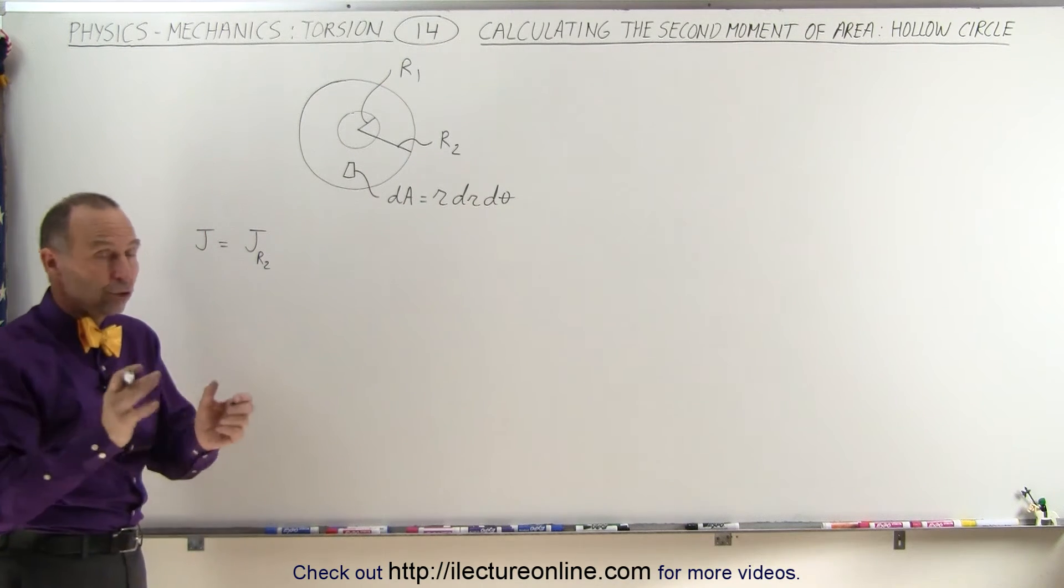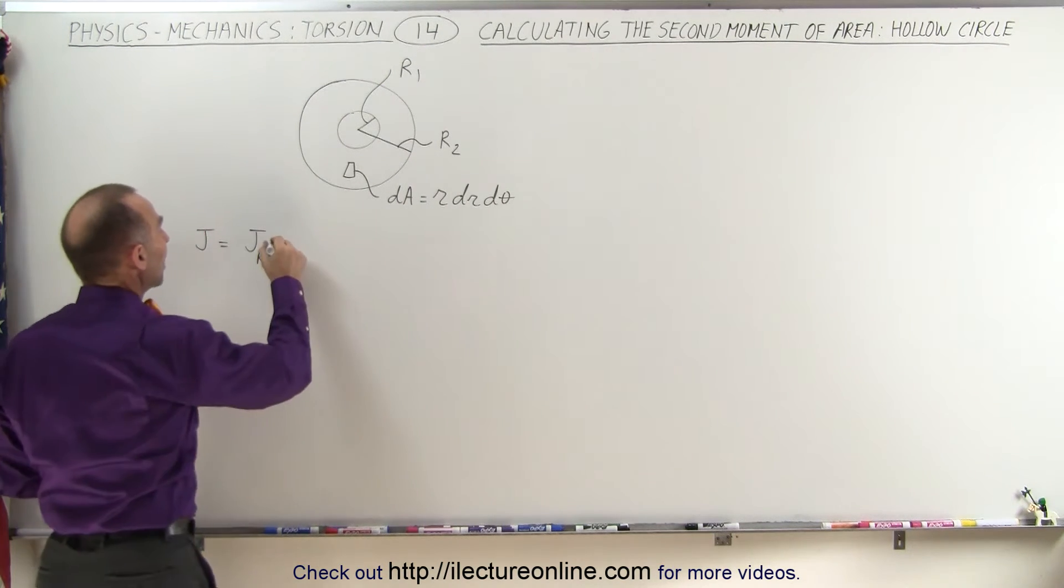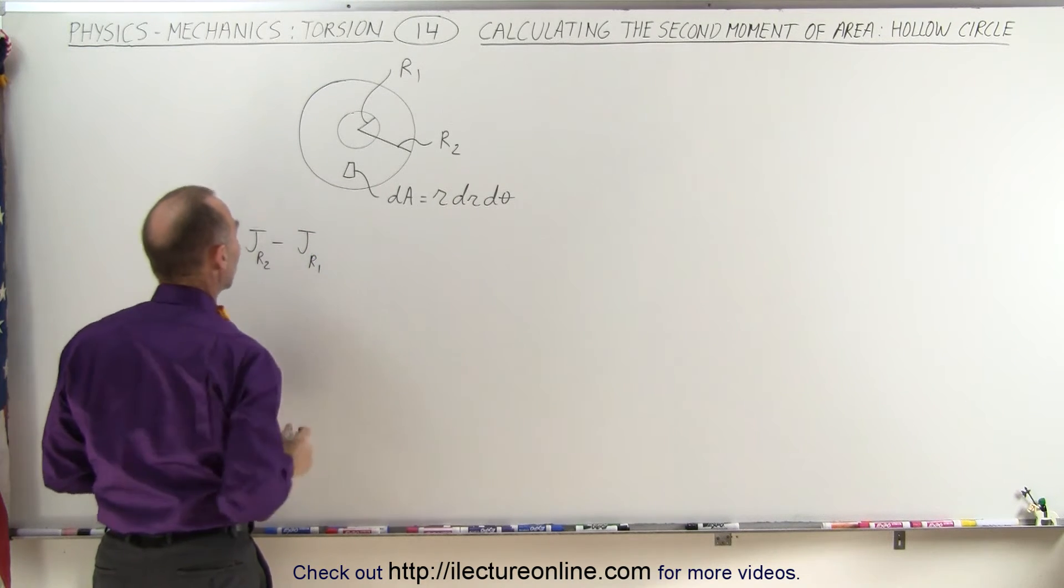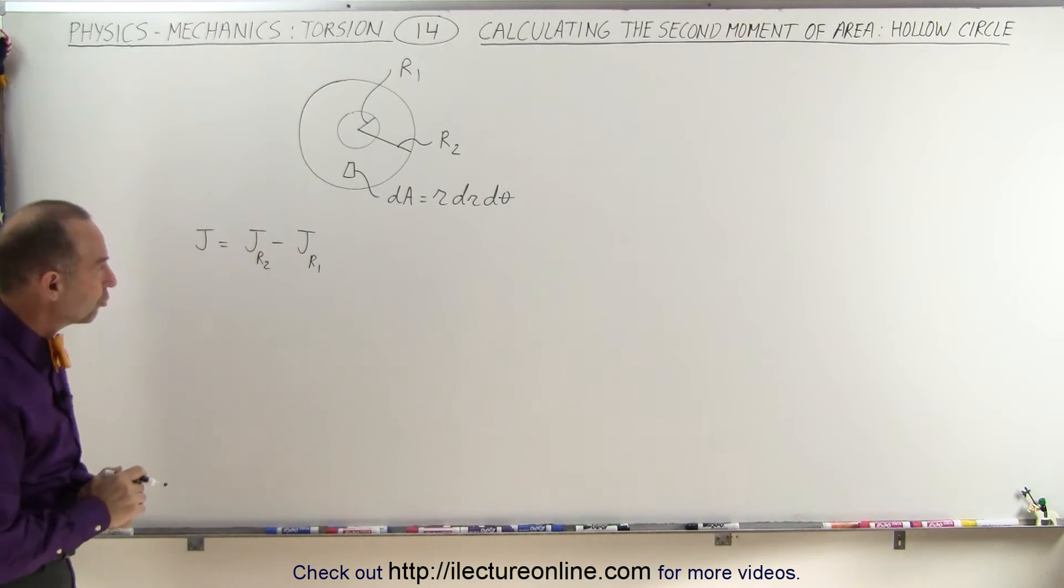if we assume that there's no hollow section to it and subtract from that the torsional constant of the inner portion that is not really there R1. So basically that's how we'll approach that.